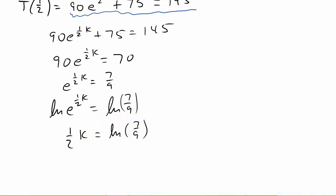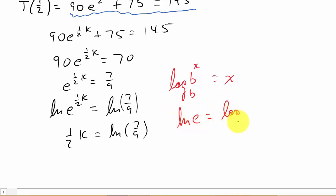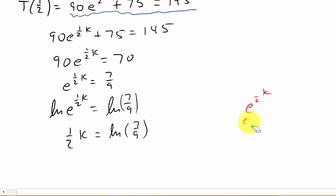Remember how we get one half K here. We have the property that if the base of the log and the base of the exponent are the same, then your answer is your exponent. Natural log of E is the same as log base E of E, so natural log of E to the one half K gives us one half K. Multiplying both sides by 2, we get K equals 2 natural log of 7 ninths.